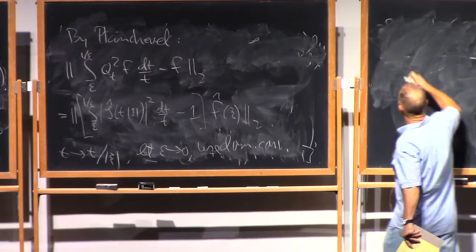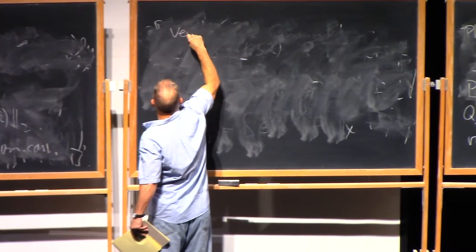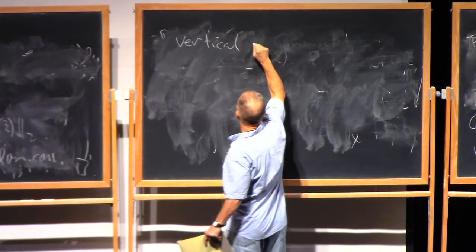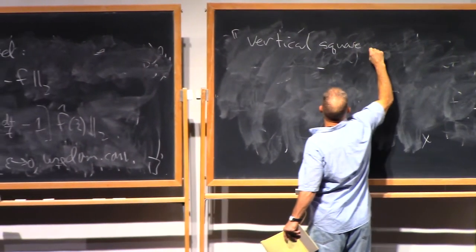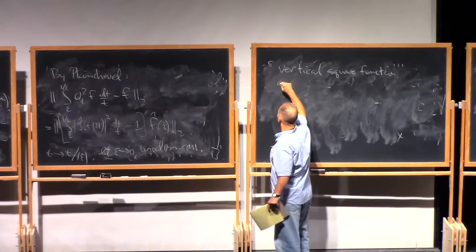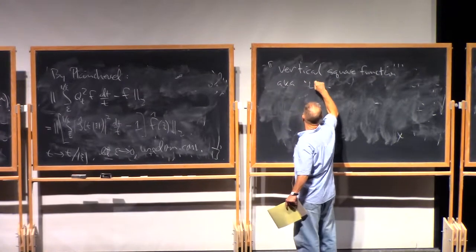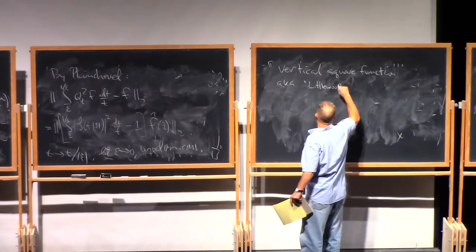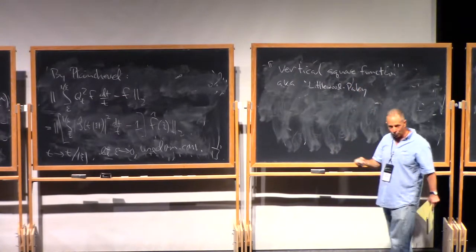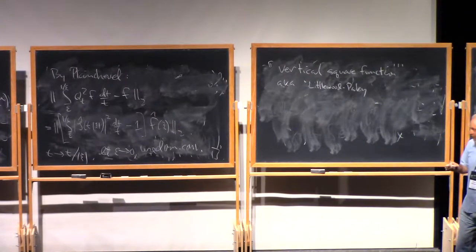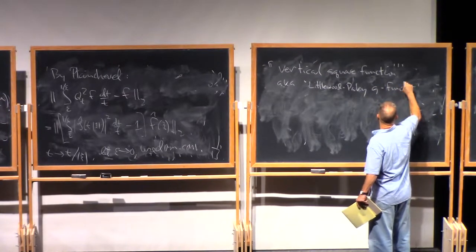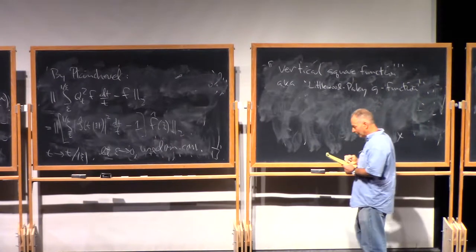So now, associated to such a Q_t operator, we're gonna define the vertical square function, which is also known as, sometimes, Littlewood-Paley G function. Well, the original Littlewood-Paley G function was for a very particular Q_t, one based on derivatives of the Poisson extension, but this is sort of a generalization of that.